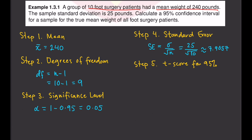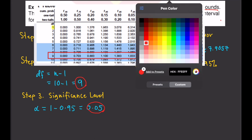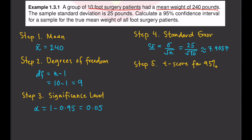Step number five is to find the T-score for the 95% confidence interval. We need the degrees of freedom and the significance level, and we look these up in the T-table. We find the significance level at the top and the degrees of freedom on the left, then look at their intersection. The T-score is 2.262.